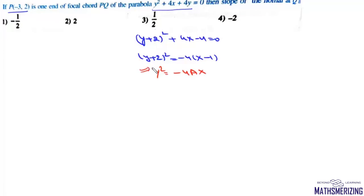Now for this parabola parametric coordinates are minus at square minus 2at so we'll write x as minus at square and capital Y is minus 2at. Now in this case capital X is x minus 1, Y is y plus 2.